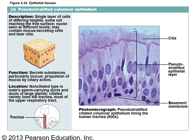Pseudostratified columnar epithelium — the word pseudostratified means falsely stratified. It looks like there are many layers but it's actually not; all cells touch both surfaces, they just have different shapes. This is found in the respiratory tract, in the trachea. The trachea has cilia at its surface embedded in mucus, which beats toward the mouth to keep mucus from going down into the respiratory passageways.